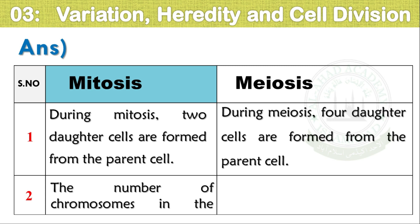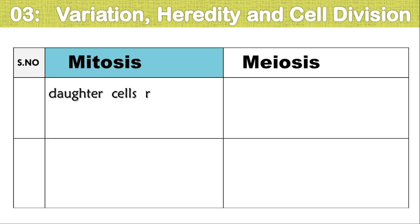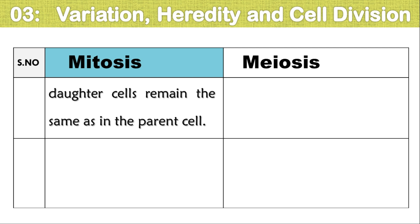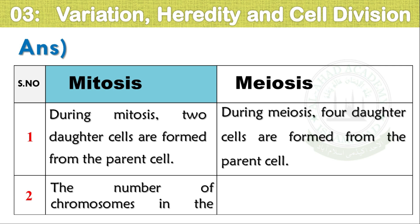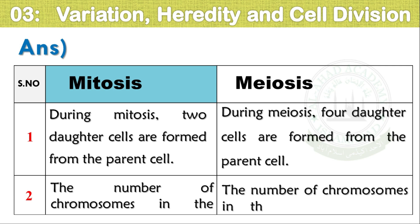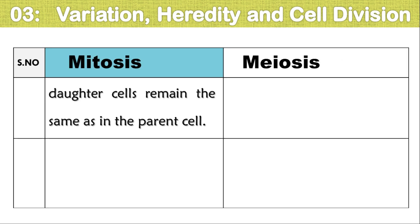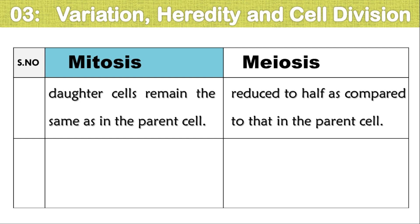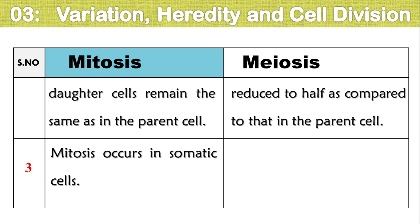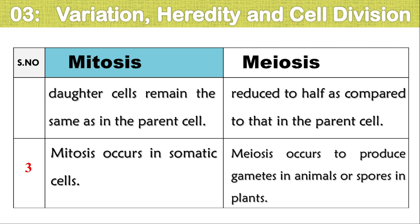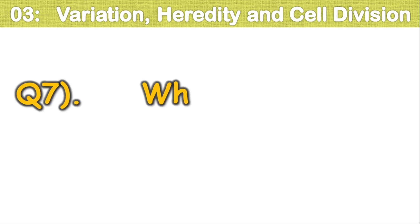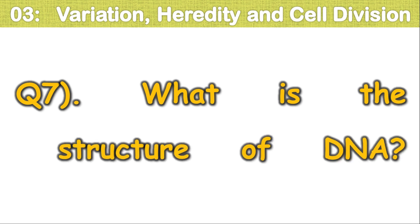In mitosis, the number of chromosomes in the daughter cells remains the same as in the parent cell. In meiosis, the number of chromosomes in the daughter cells is reduced to half compared to the parent cell. Mitosis occurs in somatic cells, while meiosis occurs to produce gametes in animals or spores in plants.